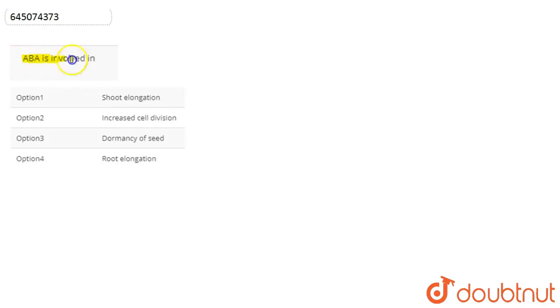what ABA is involved in. So ABA abbreviates as abscisic acid. Basically, ABA or abscisic acid is an inhibitory hormone which mainly has a role to play in